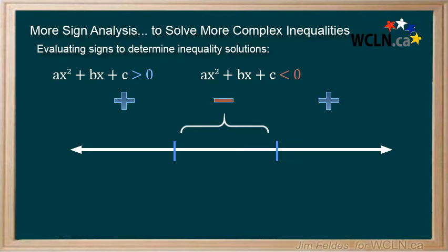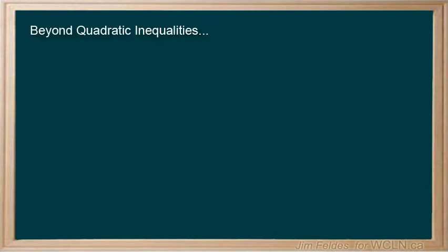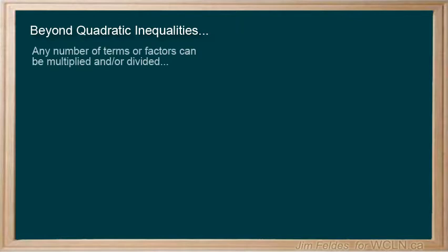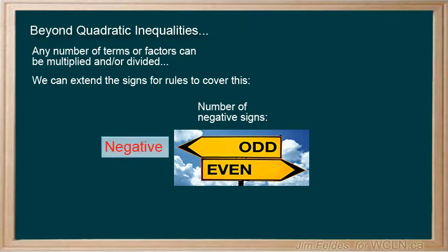We can use either of our sign analysis strategies for a variety of inequalities. There are often more than two signs to deal with when we're tackling polynomials found in inequalities. Our rules of course extend to cover this. Simply identify the number of negative signs in the factors or divisors. An odd number results in a negative, while an even number of negatives leaves you with a positive. We'll apply this to solving some higher degree and rational inequality examples next.